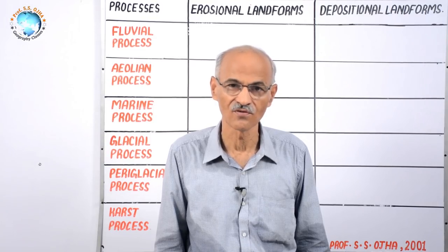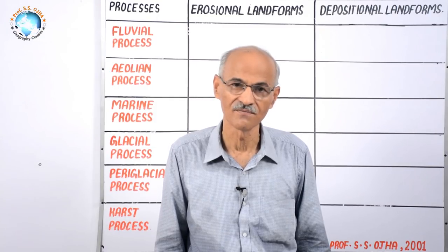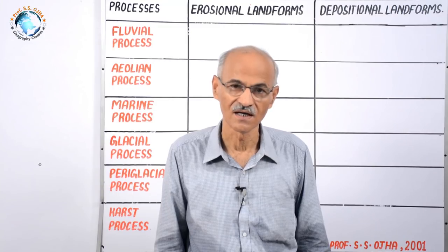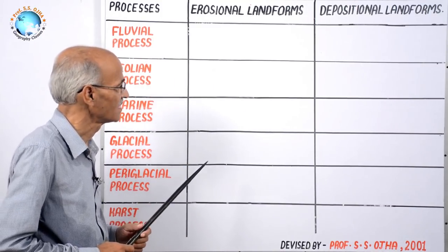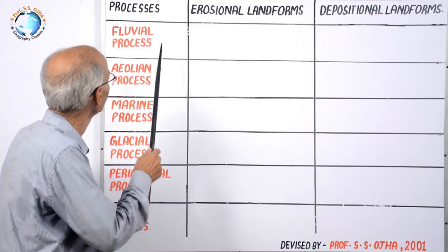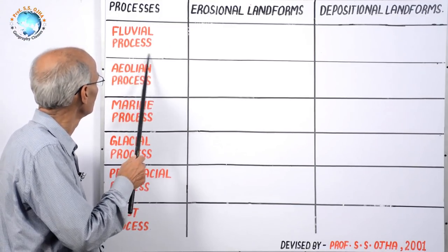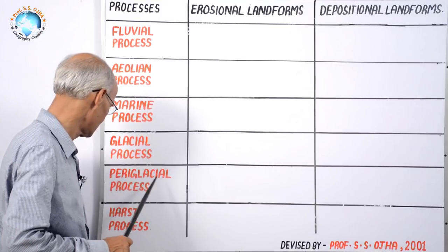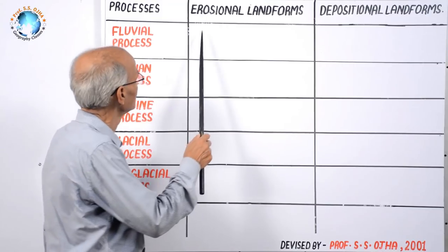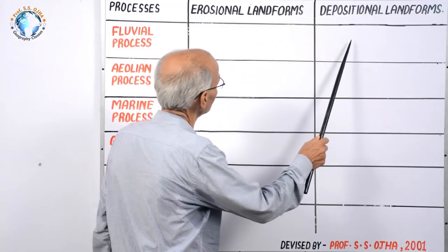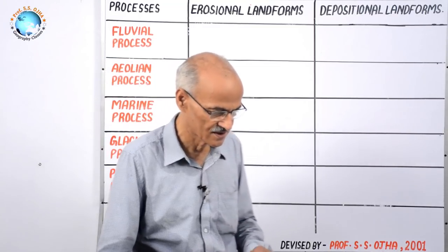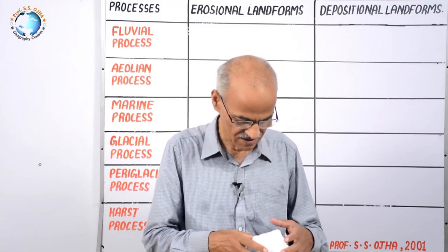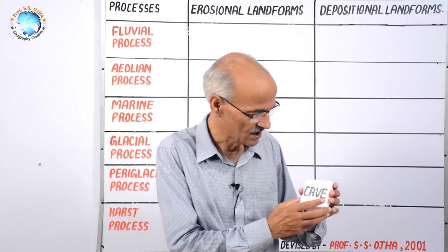In free time or at home with three or four friends, you can play this game, which will help in both prelim and mains examinations. First, draw this grid on your page or chart. In the vertical column, mention fluvial process, aeolian process, marine, glacial, periglacial, and karst processes. There is a block for erosional landforms and a block for depositional landforms. Then prepare name sticks — small slips with a landform name written on each.